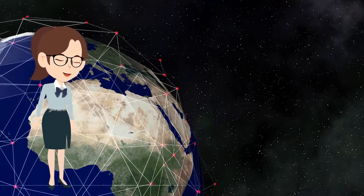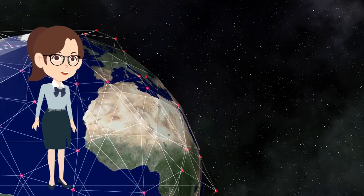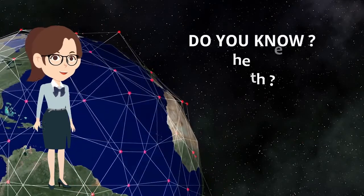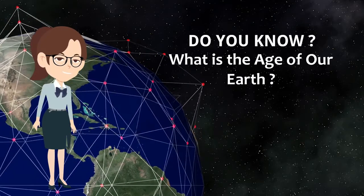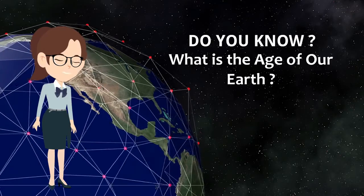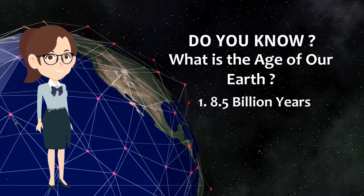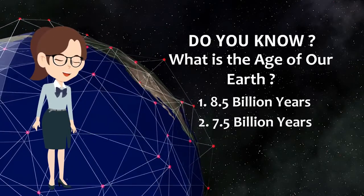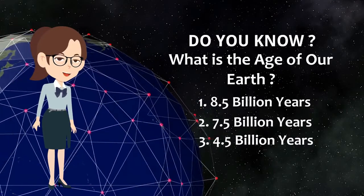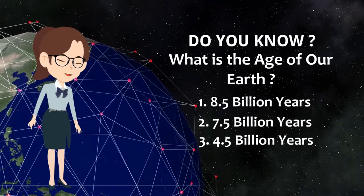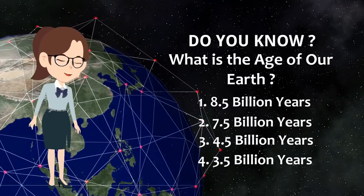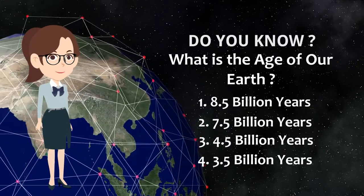This question will be an interesting one. The question is: do you know what is the age of our Earth? The options are: Option 1 is 8.5 billion years, Option 2 is 7.5 billion years, Option 3 is 4.5 billion years, and Option 4 is 3.5 billion years. Don't go to the internet — try to think of the answer.